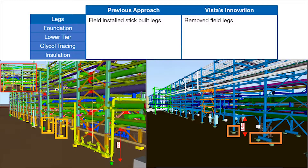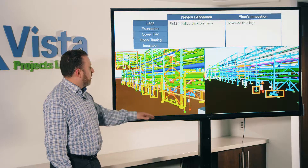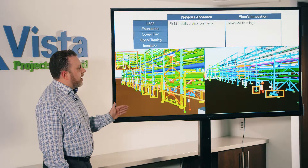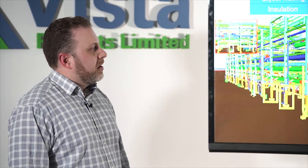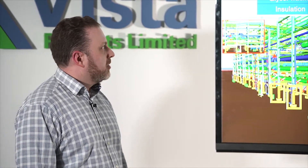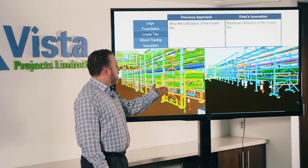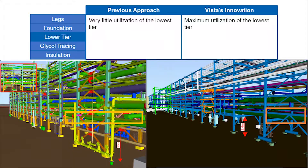Pipe rack modules. In the past design, we had field-installed stick-built legs, done to allow traffic to travel under the pipe racks. In Vista's design, we've lowered the pipe racks to just head height and removed the stick-built component of the legs — we've built them into the modules. In the past, we've used concrete foundations; in Vista's design, we're going with a steel pile with a cap. In the past, the lower tiers of modules have not been fully loaded. In Vista's design, we make sure we utilize the lowest levels to eliminate height in our plants.